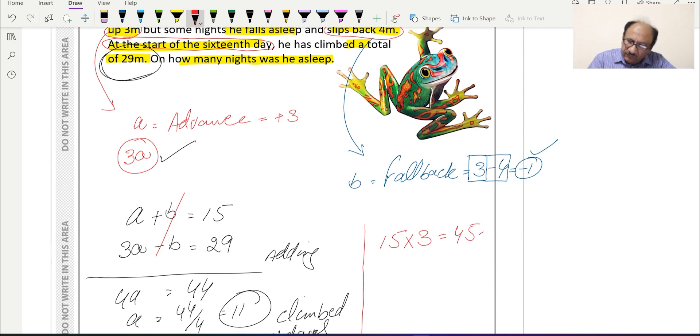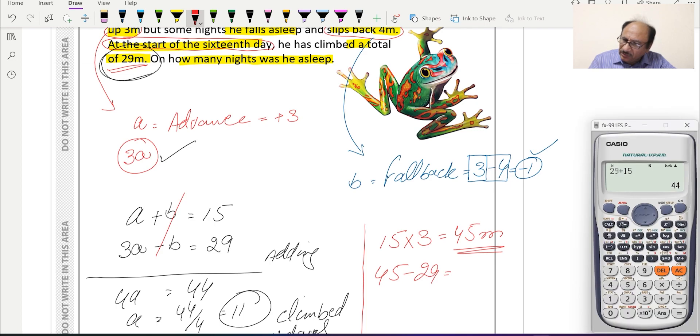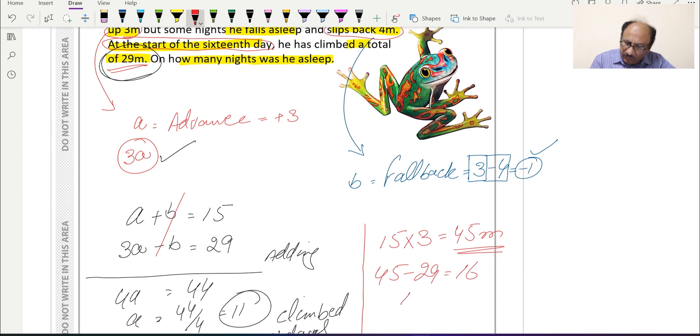So it will equal 45 meters. But we know that the frog has climbed 29 meters, so we will subtract 45 minus 29, and this equals 16.